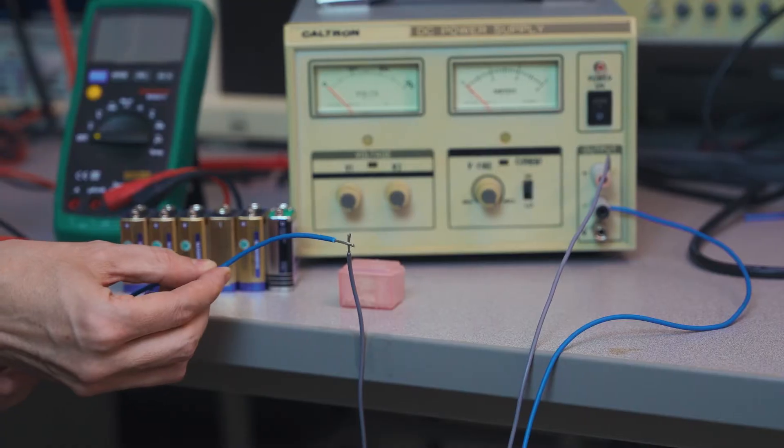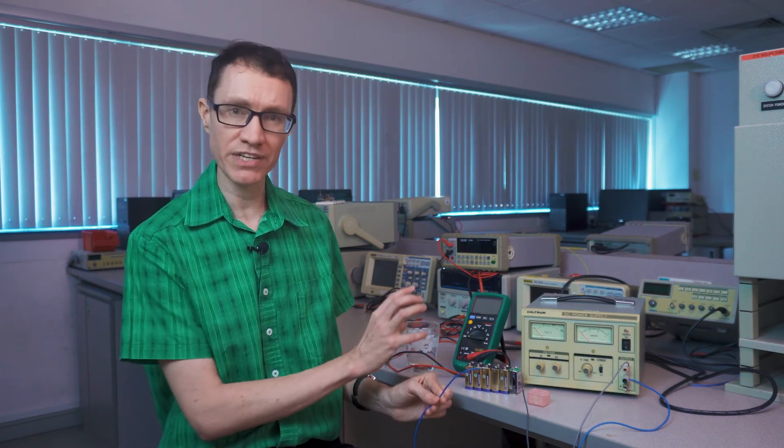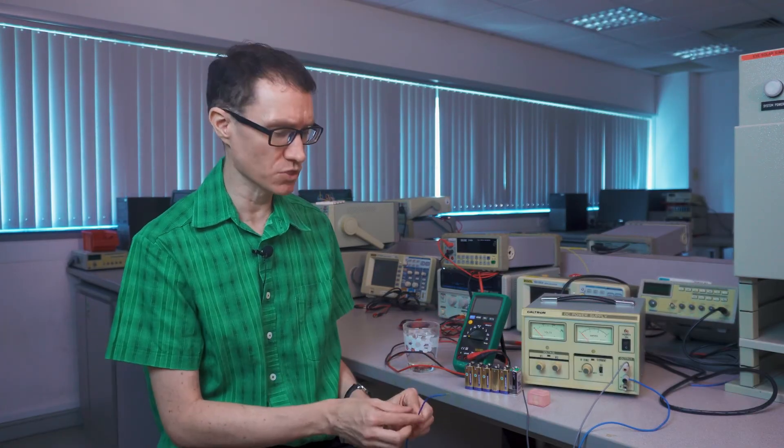I'm going to go ahead and discharge this power supply by tapping the two electrodes towards one another, even though I've shut it off. This is good practice anytime you're working around high voltage equipment because there are often internal capacitors in these power supplies that tend to be charged up. It's always a good idea to make sure they're fully discharged even though you've turned off the switch.